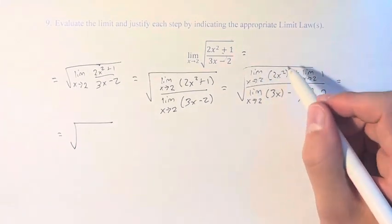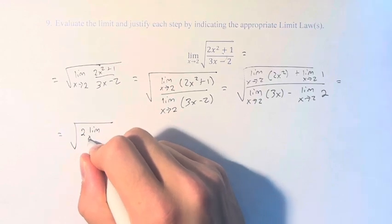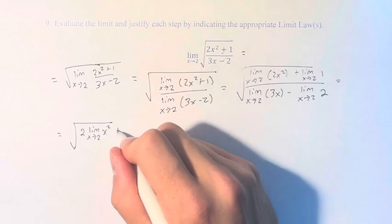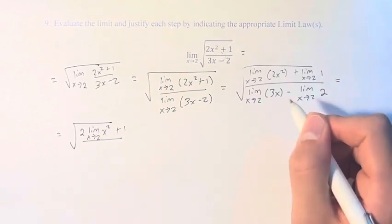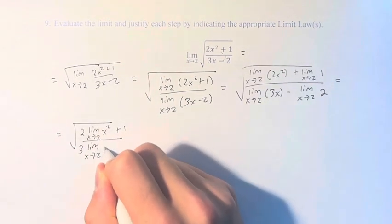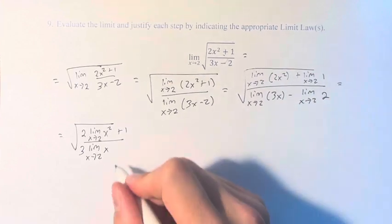The limit of 2x squared is equal to 2 times the limit of x squared. The limit of 1 is just 1. The limit of 3x is 3 times the limit of x, and the limit of 2 is just 2.